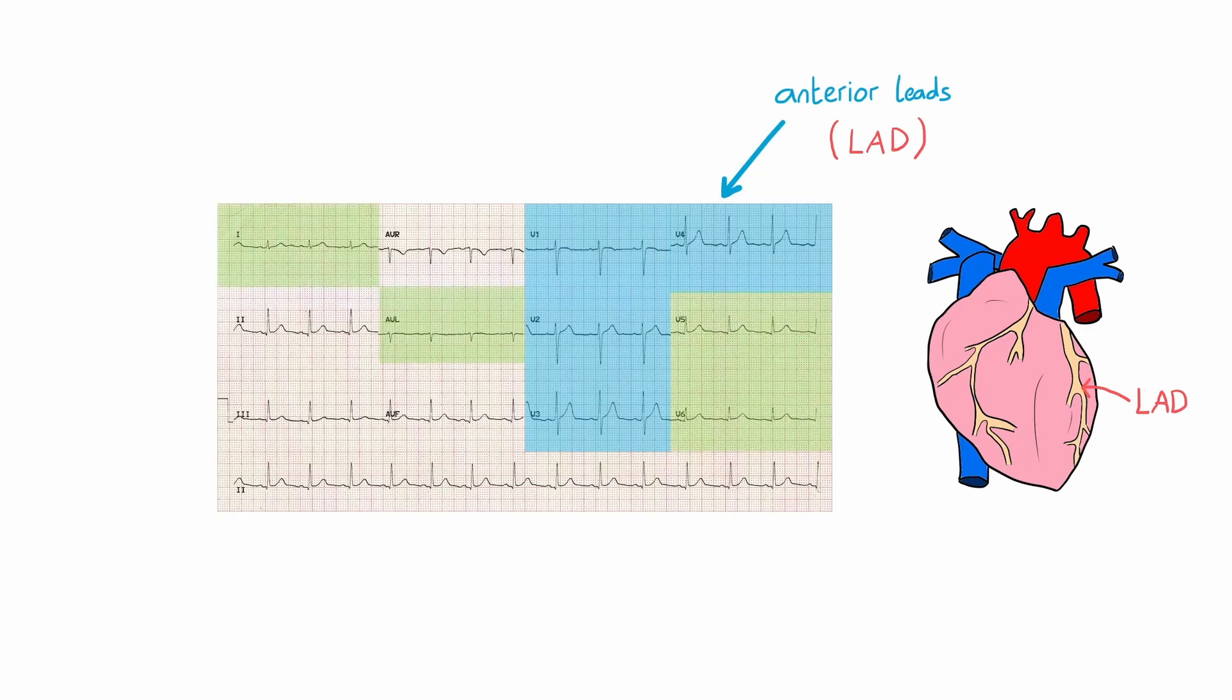Leads 1, AVL, V5 and V6 are lateral leads which represent the distribution of the circumflex artery. Finally, leads 2, 3 and AVF are inferior leads which represent the distribution of the right coronary artery.